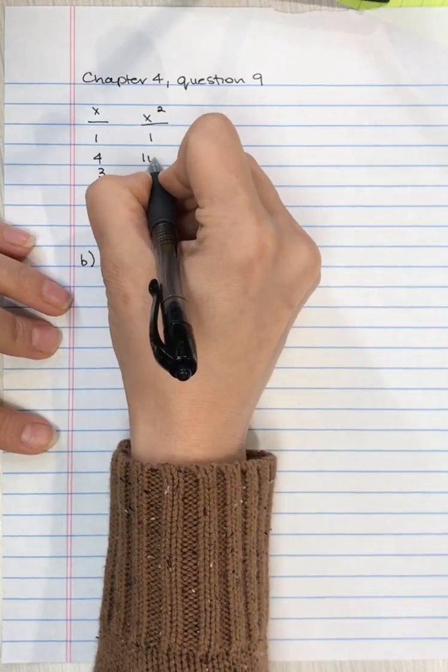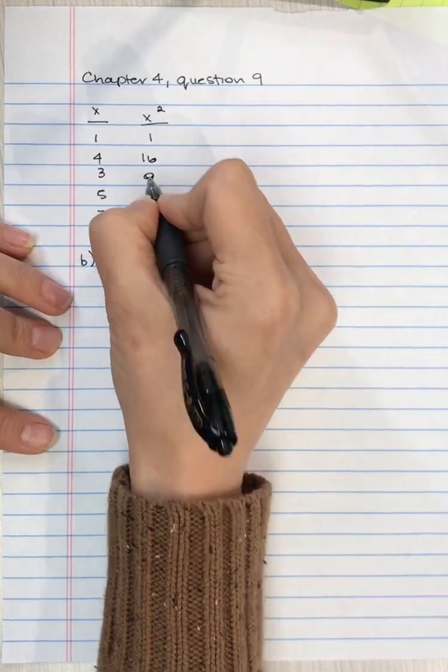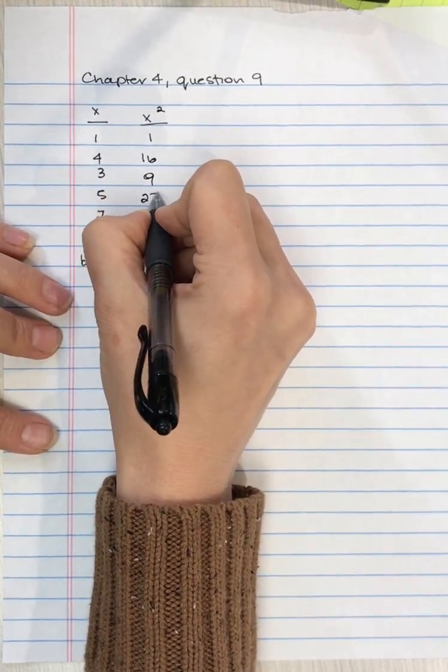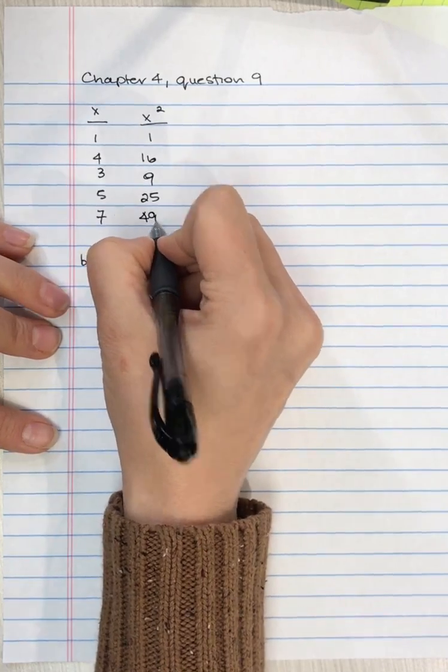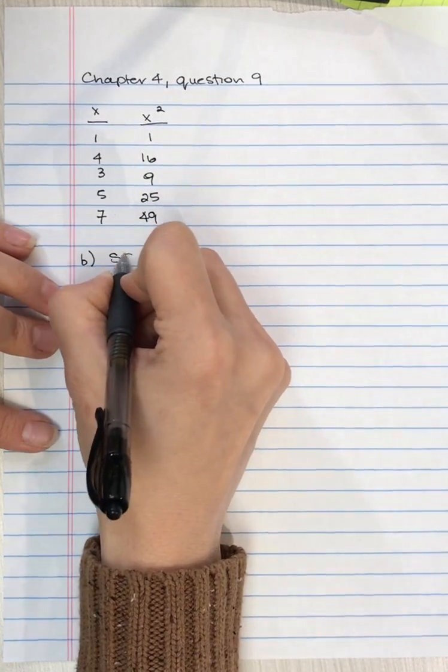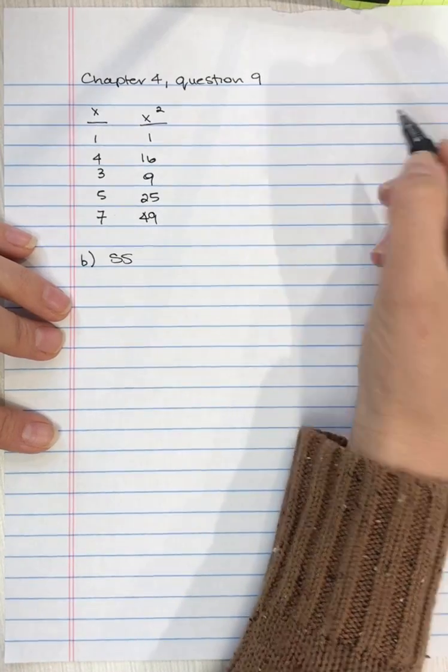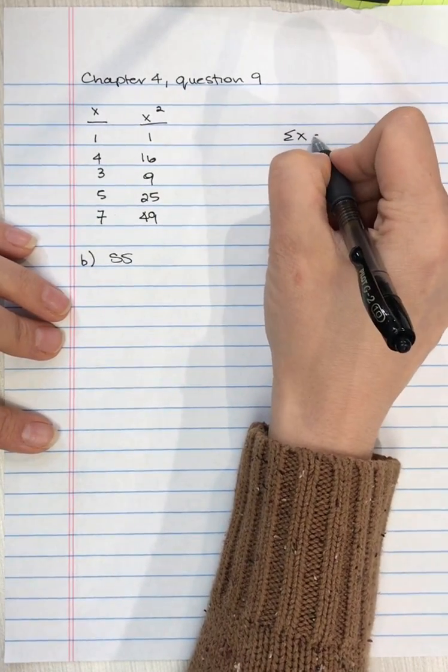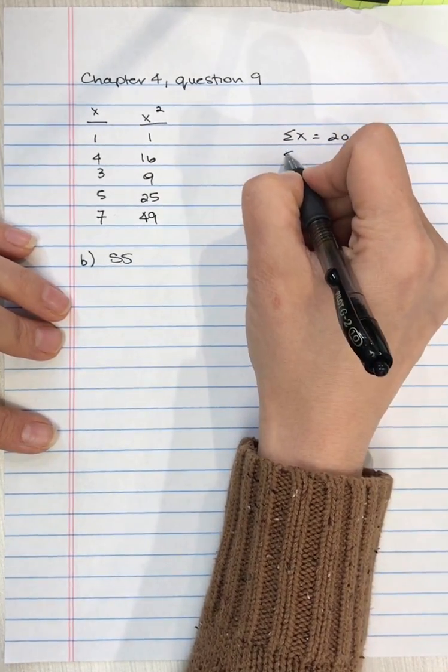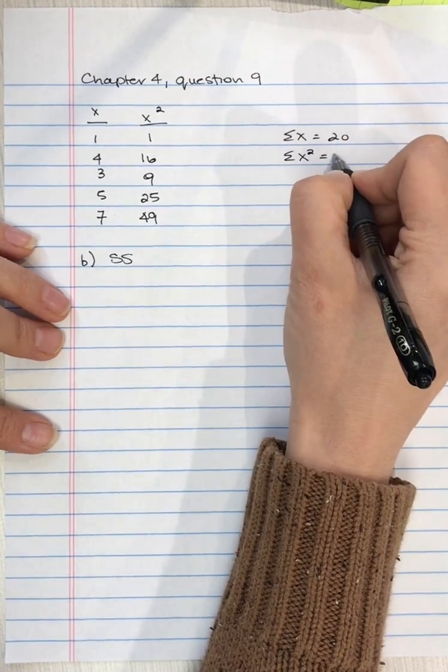I'm just copying out the numbers from part A. Normally you wouldn't need to do this, it's just that I ran out of space. For the sum of squares, the sum of x is still going to be 20, the sum of x squared is still going to be 100.